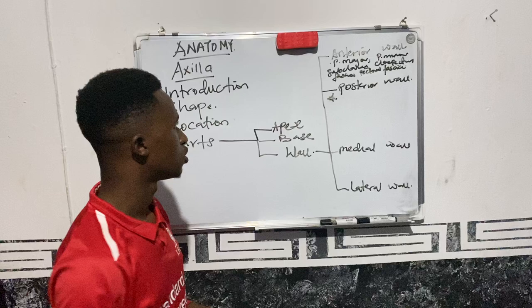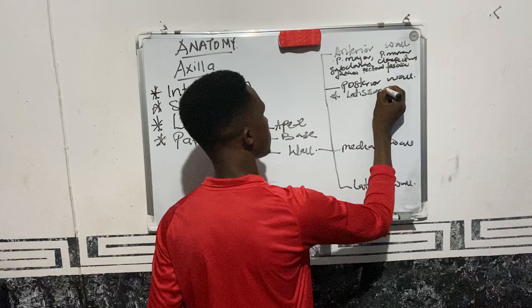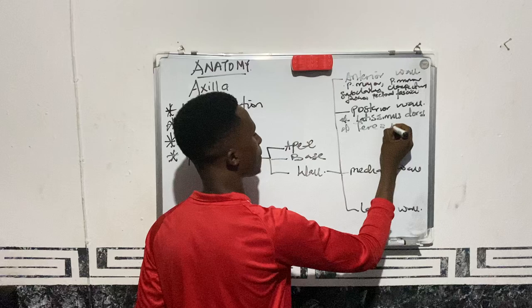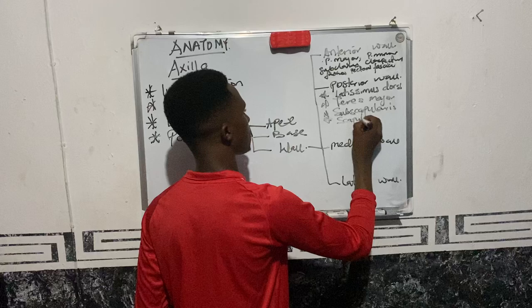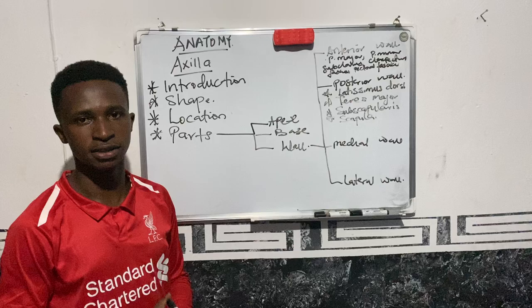The posterior wall of the axilla is formed by some muscles. It includes the latissimus dorsi, the teres major, the subscapularis, and in some textbooks they also add the scapula. These form the posterior wall of the axilla.